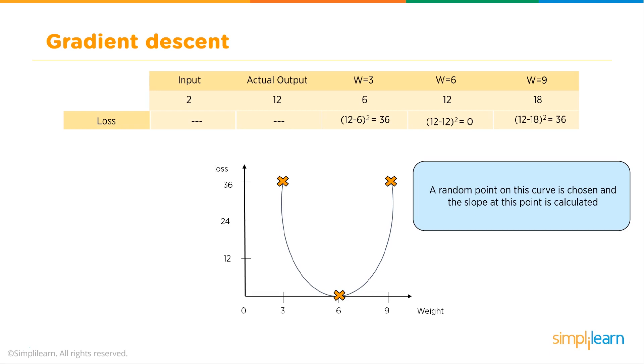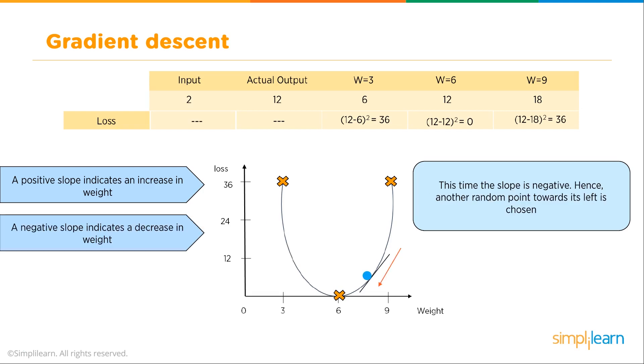A random point on this curve is chosen and the slope at this point is calculated. Now we're getting away from the human aspect of just looking at it and seeing what the answer is. We look at what's going on with the math. If we have a positive slope, it indicates an increase in the weight. A negative slope indicates a decrease in weight.